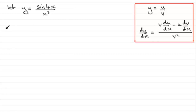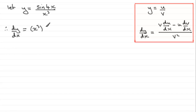So dy/dx equals the bottom of the fraction — x cubed, put that in brackets, always use brackets to avoid ambiguous statements — times the differential of the top of the fraction. To differentiate sine 4x we need to use the chain rule.